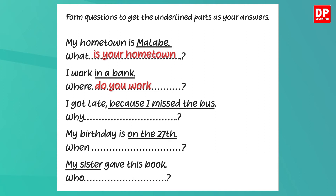Now the next one: I got late because I missed the bus. The part underlined is 'because I missed the bus,' which gives the reason why you got late. This statement is in simple past tense, so instead of 'do,' this time you have to use 'did.' So the question is: why did you get late?